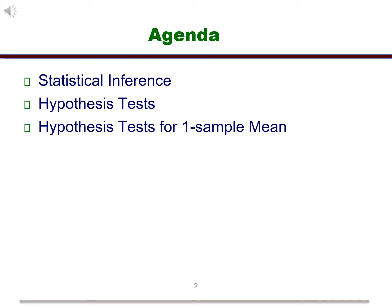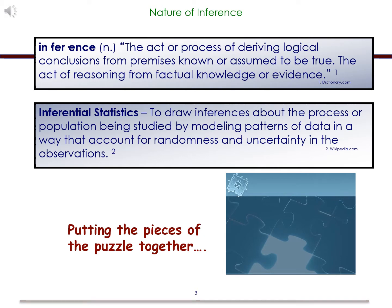Let's start with some definitions. Initially, one summarizes data through the use of numerical and graphical summaries. These are fine to give us a snapshot of what is happening with the data set that we have on hand. The problem is that we don't know what might happen in the future. We can get an idea about this by making inference. Inference is defined as the act or process of deriving logical conclusions from premises known or assumed to be true. It is also considered the act of reasoning from factual knowledge or evidence. Inferential statistics is used to draw inferences about a process or population being studied by modeling patterns in the data in a way that can account for randomness and uncertainty in the observations.